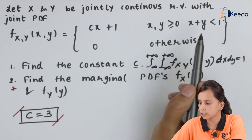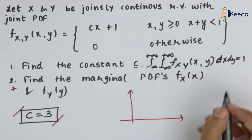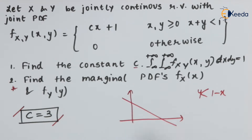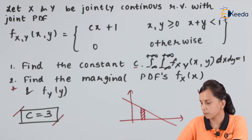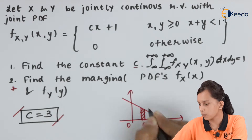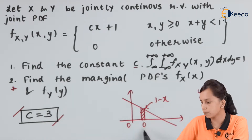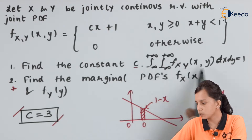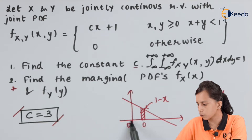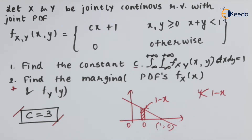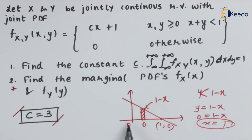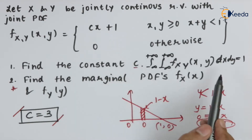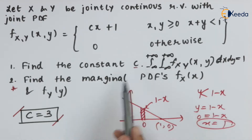In this case, y is greater than 0 and x plus y is less than 1, meaning y is less than 1 minus x. This is a parallel strip — a straight line. So y varies from 0 to 1 minus x, and x varies from 0 to 1, since the point (1, 0) lies on the line y = 1 minus x. We integrate c(x+1) dx dy, equate to 1, and get c equals 3.